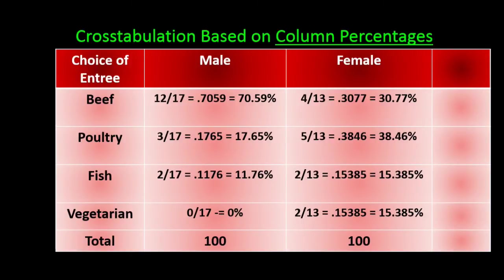So you have three ways of presenting the original cross-tabulation as a percentage: an overall percentage, row percentages, and column percentages.